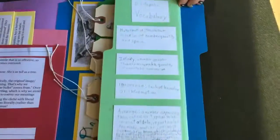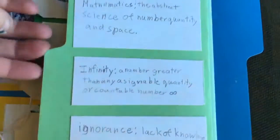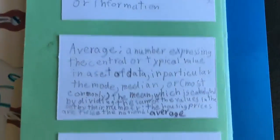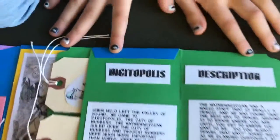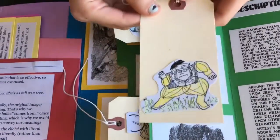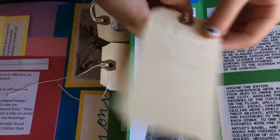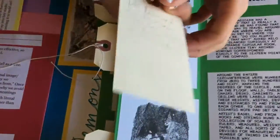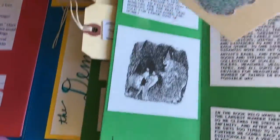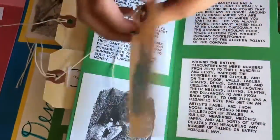Over in the Digitopolis vocabulary that Carter wrote, there are some of his favorite words. You open this up and there's his Digitopolis description. Then there are his favorite characters: Alec Bings — there's a picture of him and Milo and a couple of words about him — then the Dodecahedron, Doctor Discord, and the Mathemagician, the king of Digitopolis.